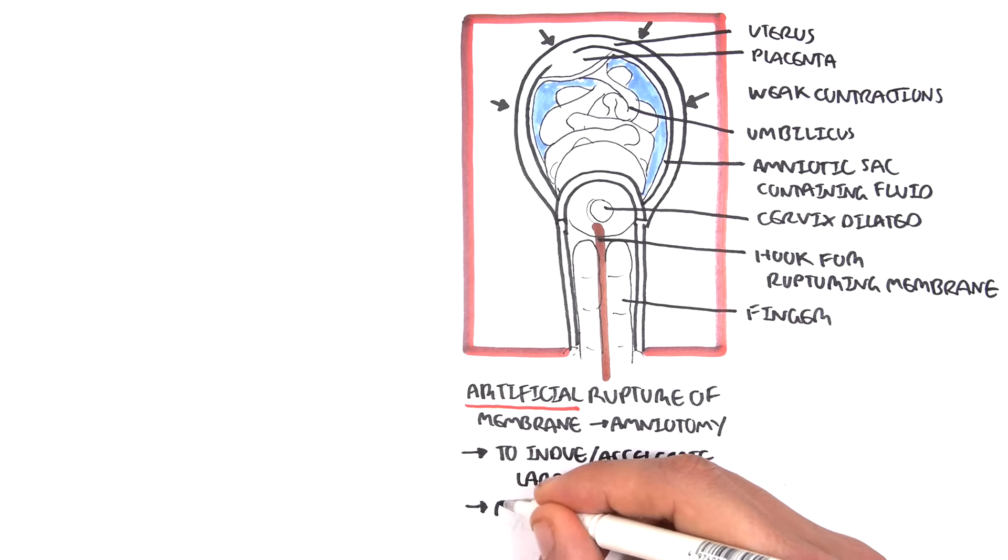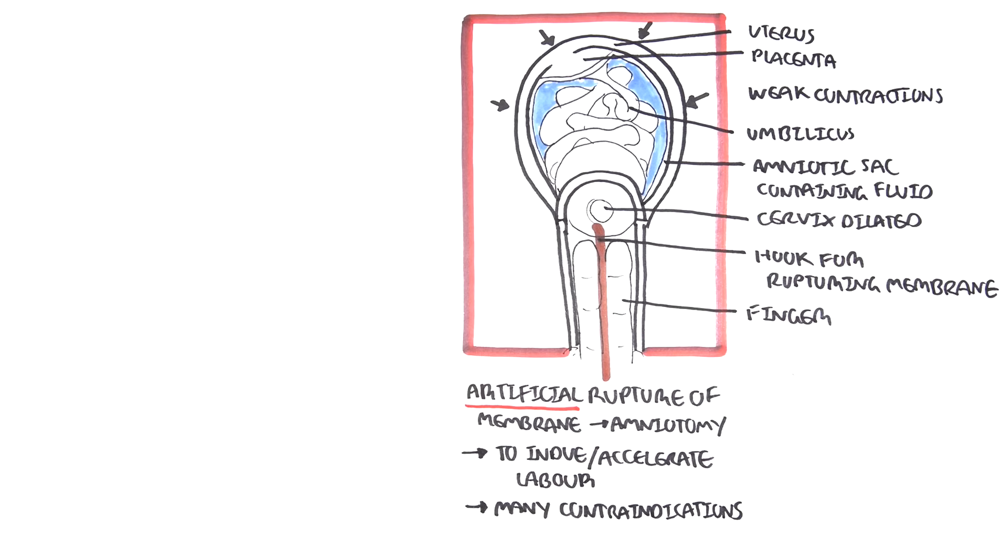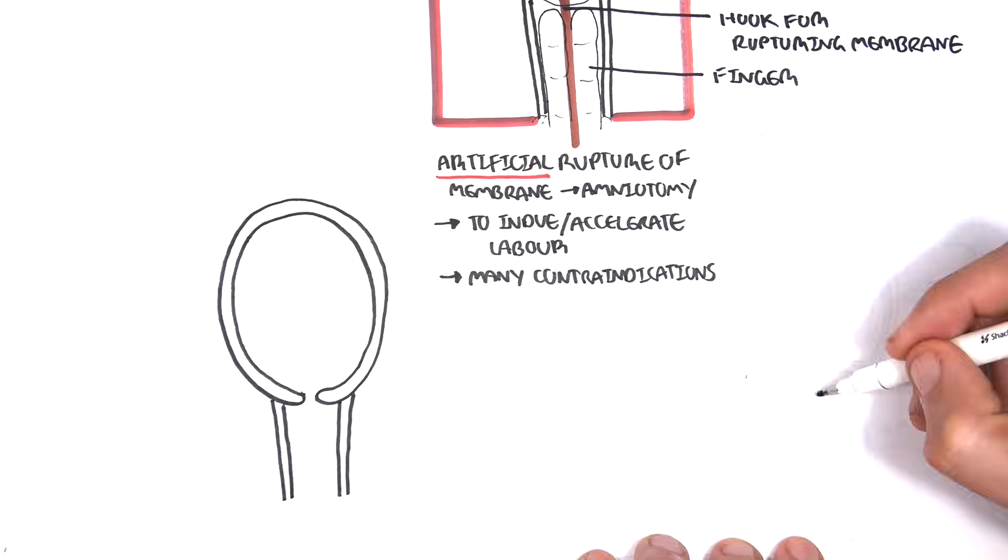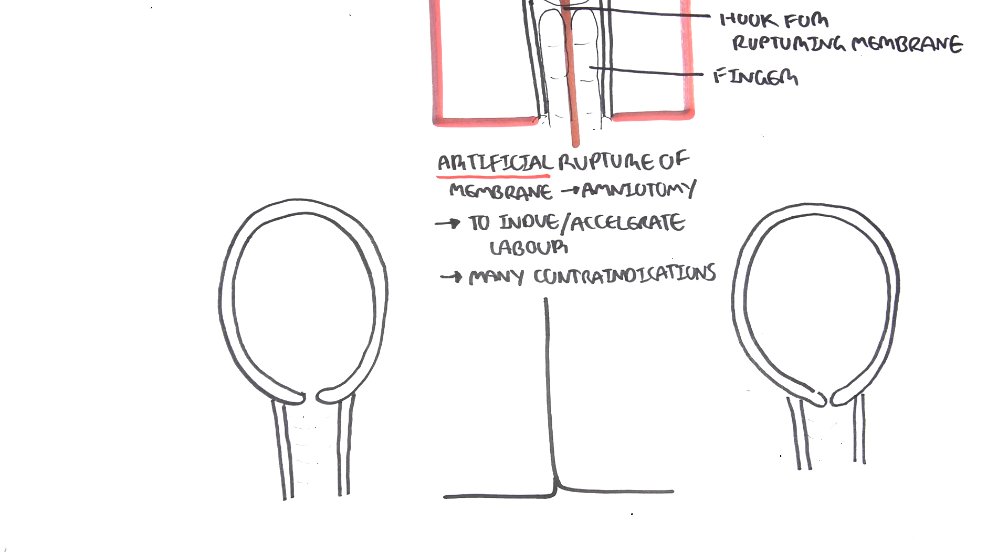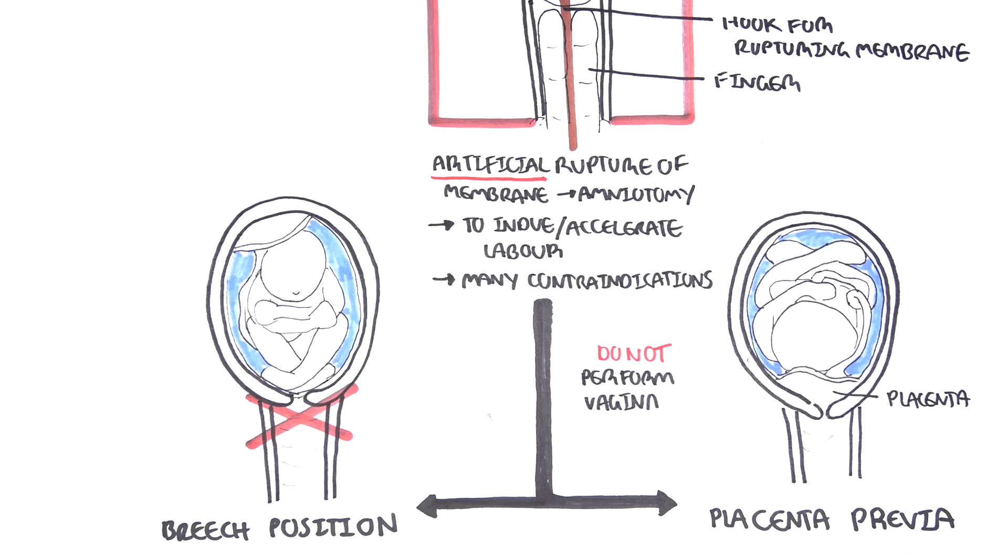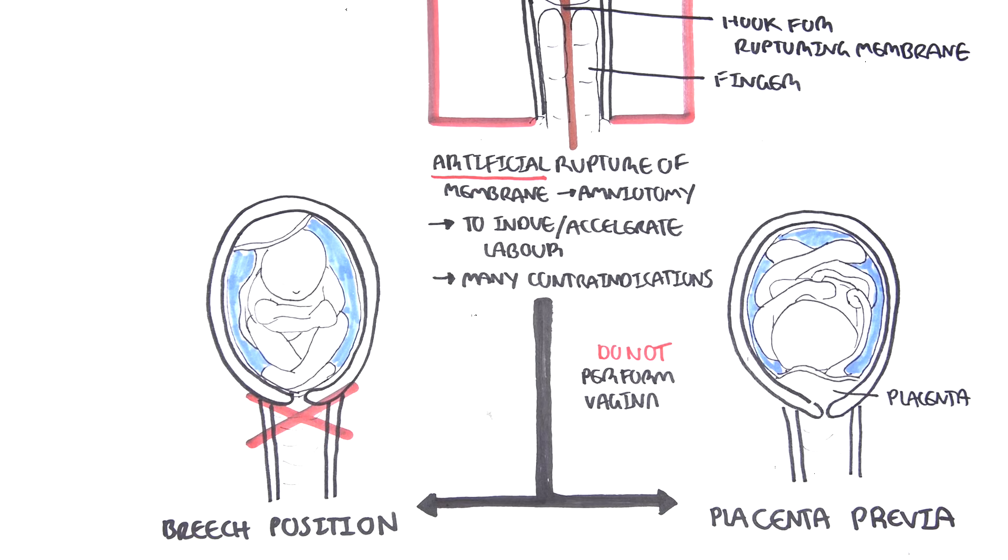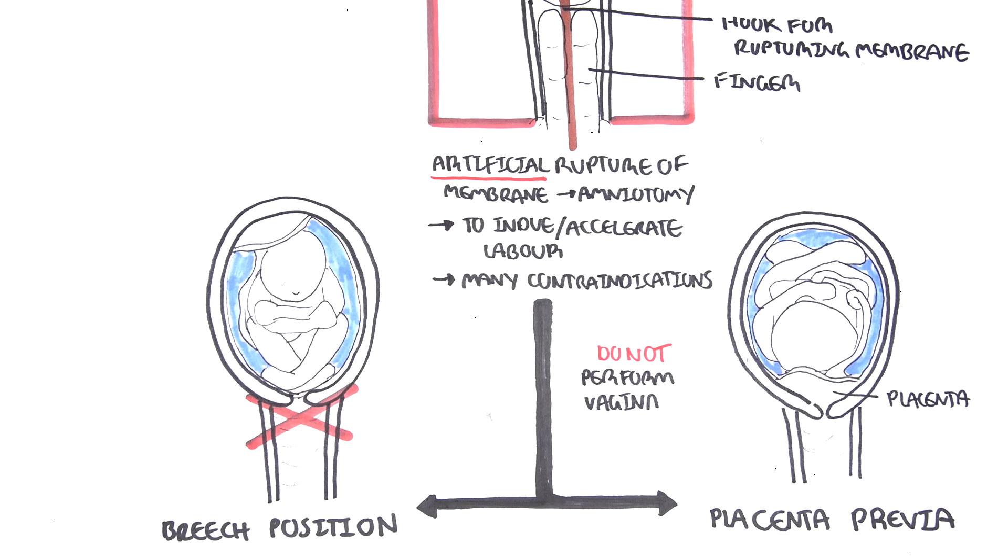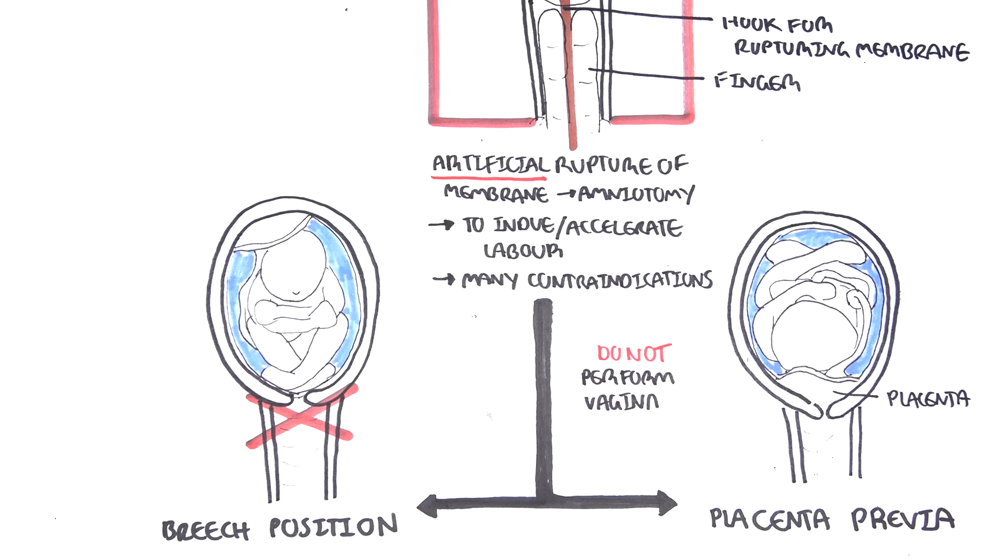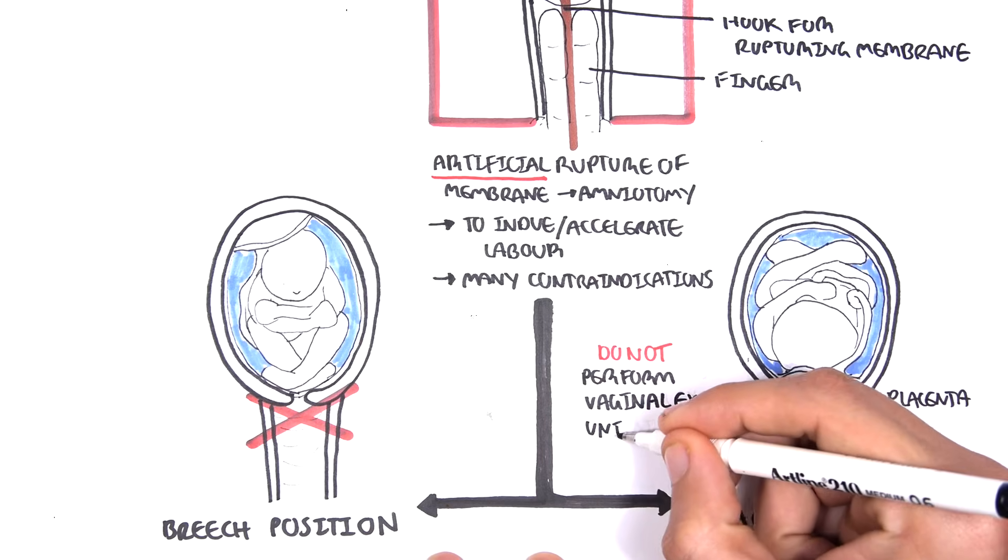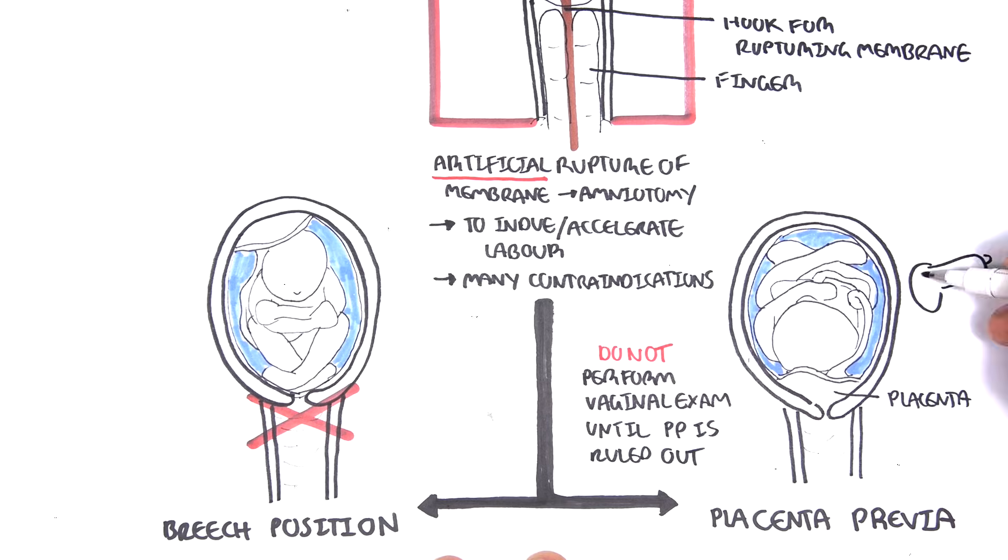However, there are many contraindications of artificial rupture of membranes. For example, rupturing of membranes artificially is contraindicated if the baby, if the fetus, is in a breech position which is where the baby is positioned feet first. And this can be found out with an ultrasound or an abdominal examination. The other contraindication of premature rupturing of the membranes artificially is placenta previa, where the placenta is lying close to the cervix, actually over the cervix, over the internal os. And it's important to not perform any form of vaginal examination before placenta previa is ruled out. And placenta previa can be ruled out with ultrasound.